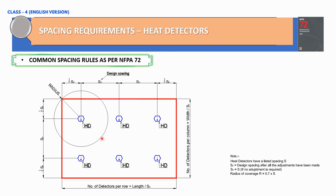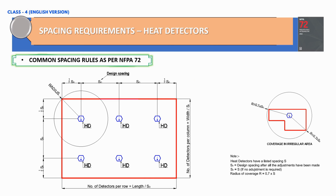The heat detector coverage area radius shall be defined by the formula: R = 0.7 multiplied by SD (or the listed spacing S if no adjustment is needed). For an irregular room where we need to install a detector, we check the coverage area using this formula. If the detector covers the entire irregular-shaped area, the location is acceptable. If the coverage requirement is not met, the detector spacing must be adjusted.